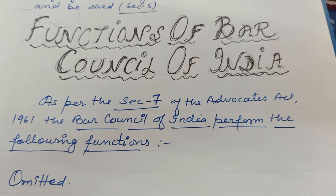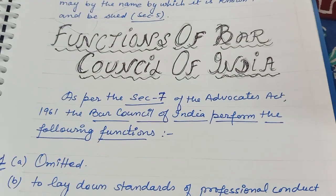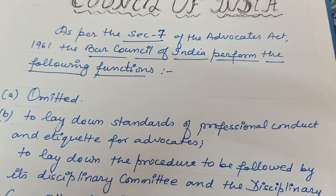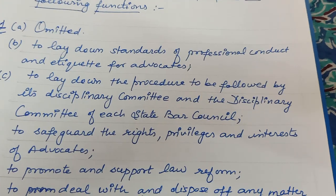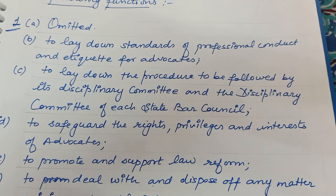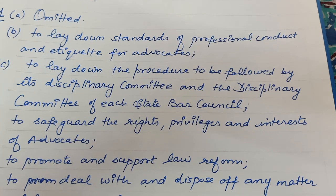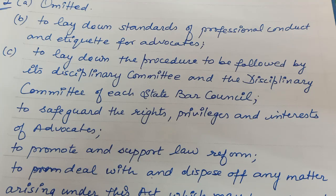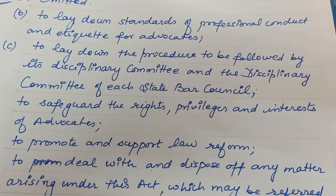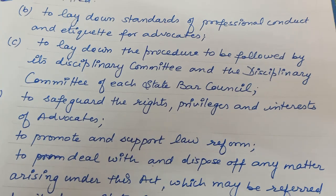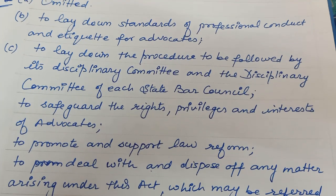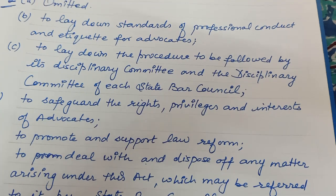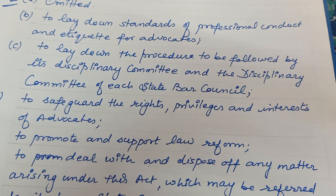Functions of Bar Council of India: BCI bahut saare functions perform karti hai jo Section 7 ke andar diye gaye hain. Function 1(B): to lay down standards of professional conduct and etiquette for advocates — matlab advocates ka professional conduct kaisa hoga, court ke liye, society ke liye, client ke liye, opponent ke liye — har jagah pe public mein inki etiquette aur professional conduct kaisi honi chahiye, yeh bar council maintain karti hai.